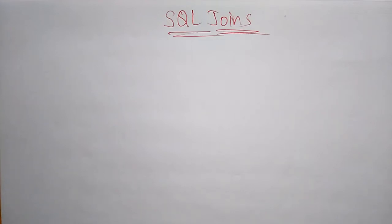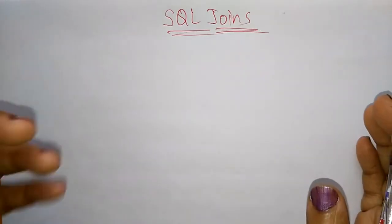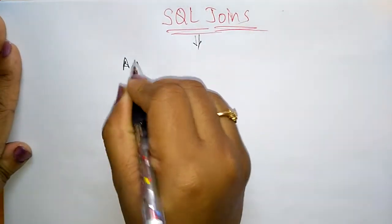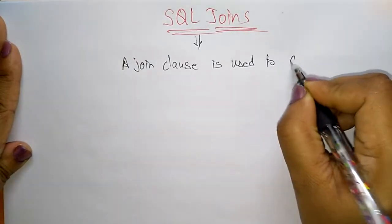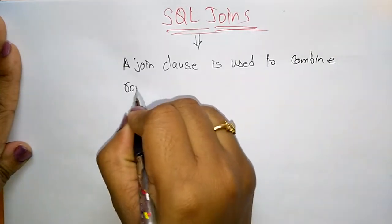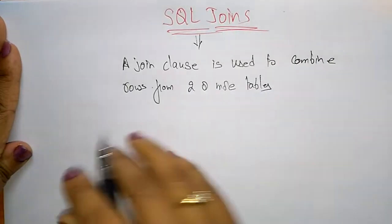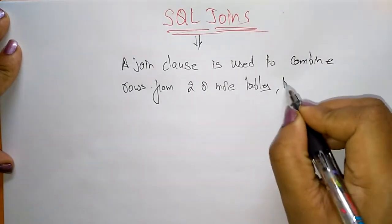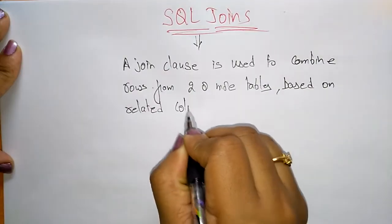Coming to the next topic in database management system is SQL joins. SQL stands for structured query language, and joining means you are combining two or more tables with clauses. A join clause is used to combine rows from two or more tables based on a related column between them.